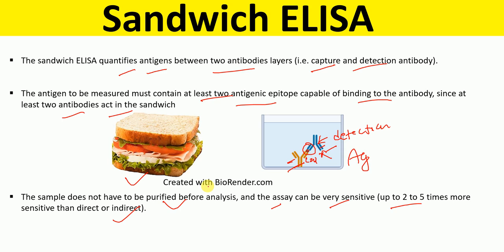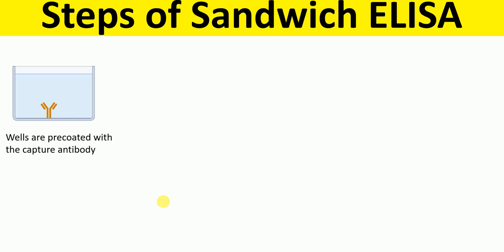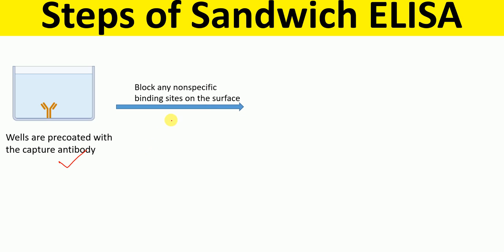So now, what are the steps involved in Sandwich ELISA? First, we coat the plate — we pre-coat the plate with the capture antibody. After pre-coating the plate with the capture antibody, we block non-specific binding sites with a blocking buffer.